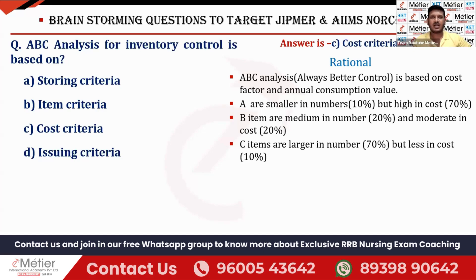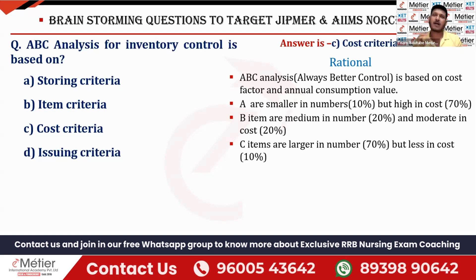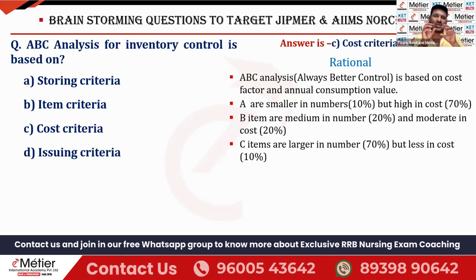The next one is B item. The number is medium — moderate numbers will be there — and the cost is also moderate. We can take examples like syringe pump, infusion pump. These are not so costly compared to CT or MRI machines. The cost is moderate and the quantity is also moderate.